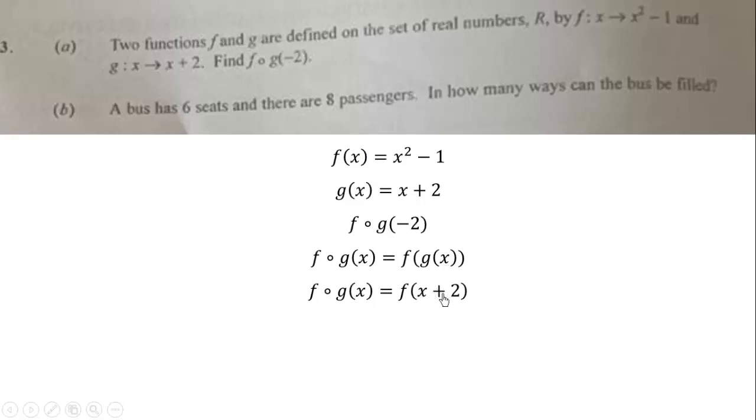We plug in x + 2 wherever we see x, and that will give us (x + 2)² - 1. Now to get f∘g(-2), we substitute x = -2, and that will give us (-2 + 2)² - 1, which is equal to 0 - 1, and this is -1.